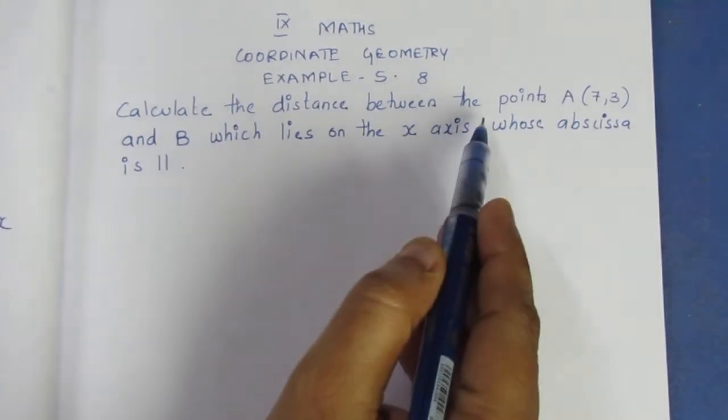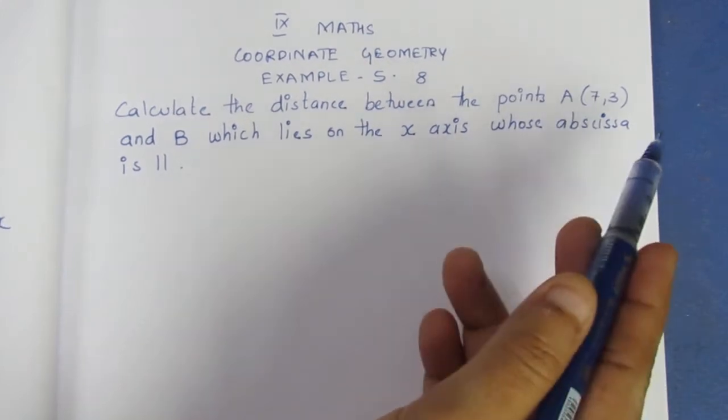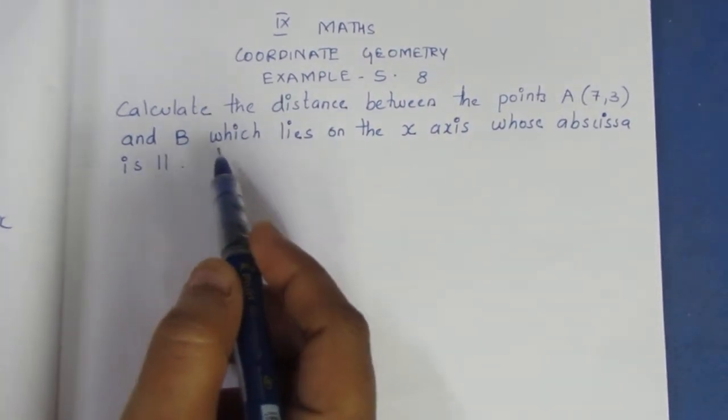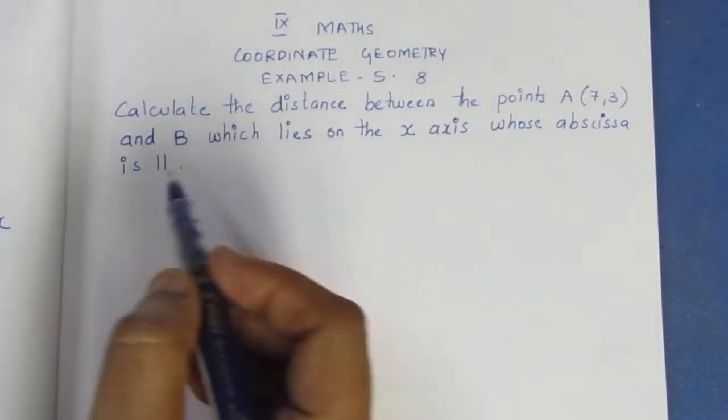Calculate the distance between the points A(7,3) and B which lies on the x-axis where abscissa is 11.